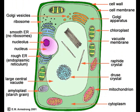Unlike the animal cell, a plant cell has a cell wall, which does not allow substances to pass through. The cell wall adds structure to both the cell and the plant itself.